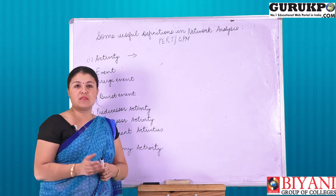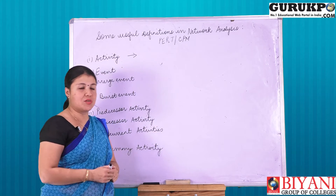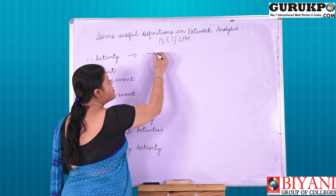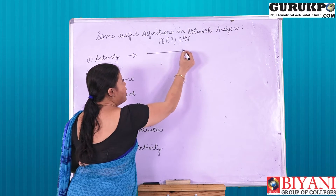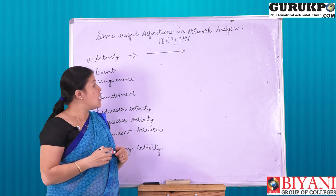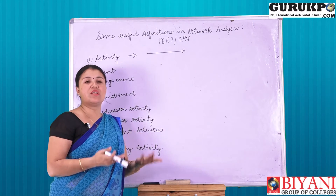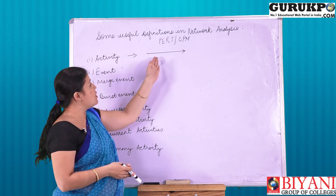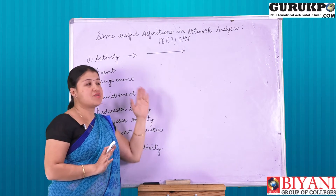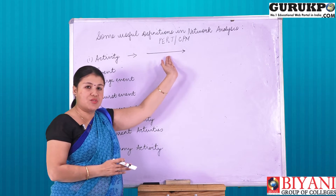An activity is an act of work that requires time and resources for its completion. An activity is indicated by a straight line followed by an arrow. The length of the line does not indicate the duration — it has no connection with the duration. Whether you have a small line or a large line, it does not symbolize the duration.